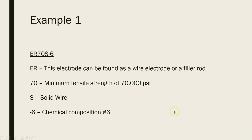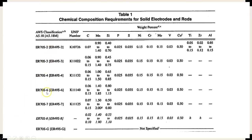Let's look at a couple of examples. The first example is ER70S-6. Breaking it down: E and R together means this electrode can be found either as a wire electrode or a filler rod. The 70 means the minimum tensile strength is 70,000 pounds per square inch. The S tells us it's a solid wire electrode. And dash 6 tells us it has chemical composition number 6 — we'd just go back to that chart and find dash 6 to see what the chemical composition is.